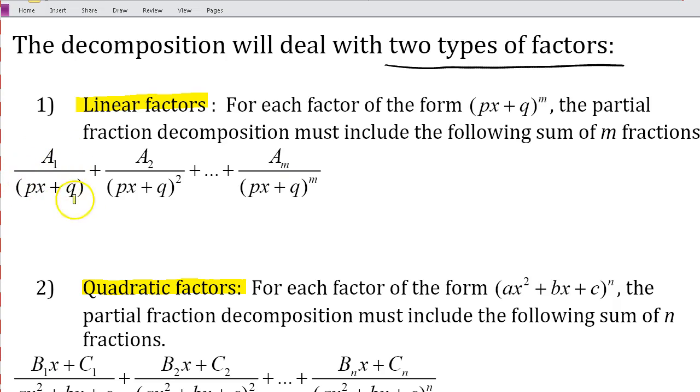And the other thing you want to notice here is that these are linear factors. Even though this is a linear factor squared, it's still a linear factor. And the numerator's degree is going to be 1 less than the denominator's degree. So since here my linear factors have a degree of 1, my numerators will have a degree of 0.